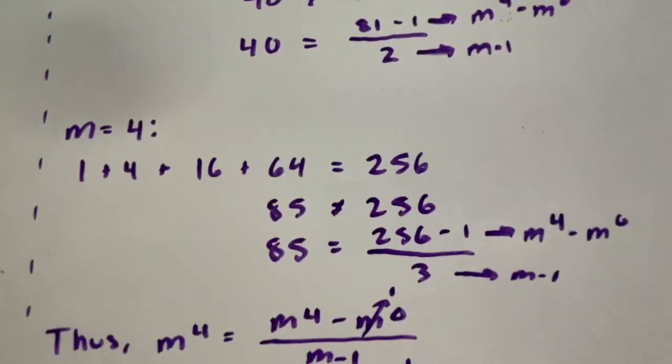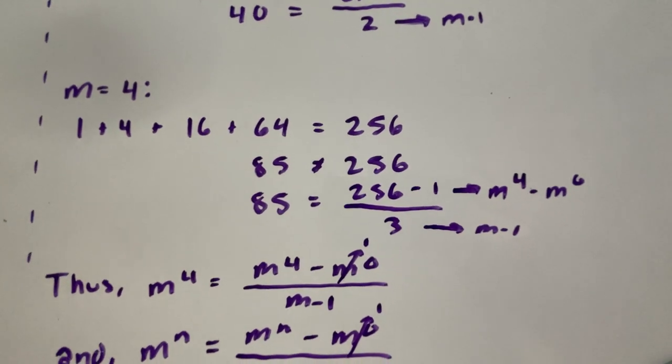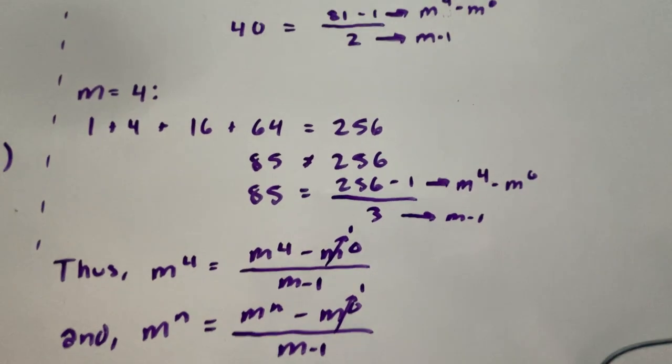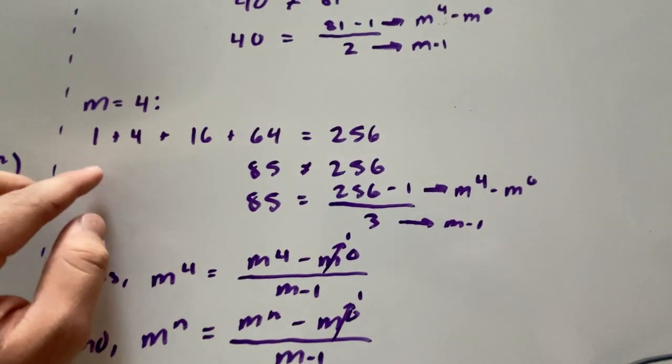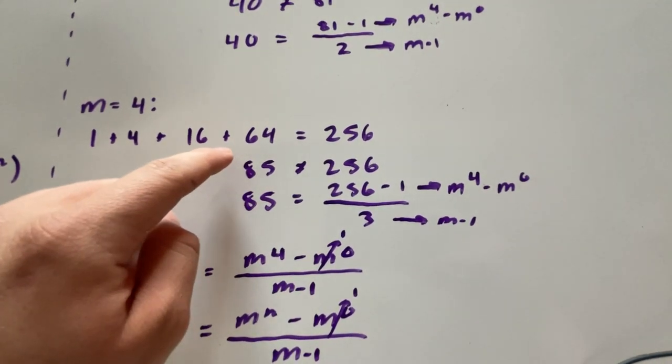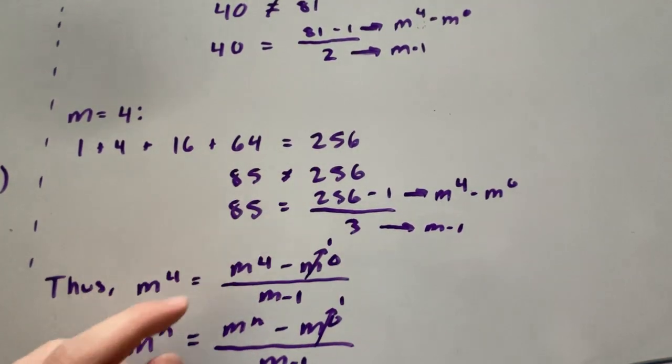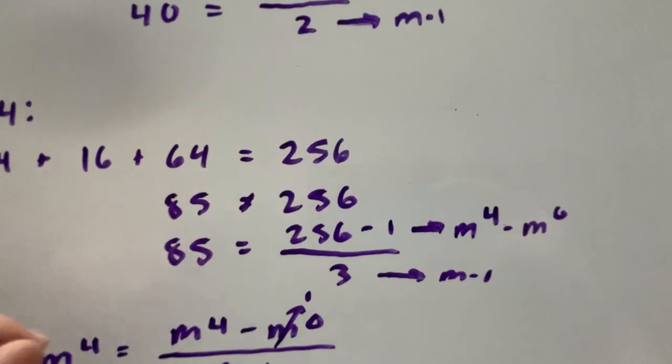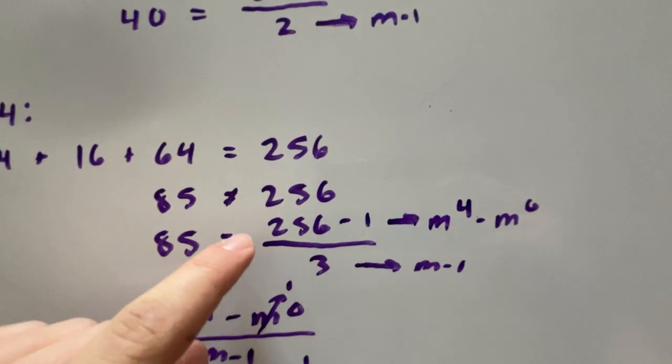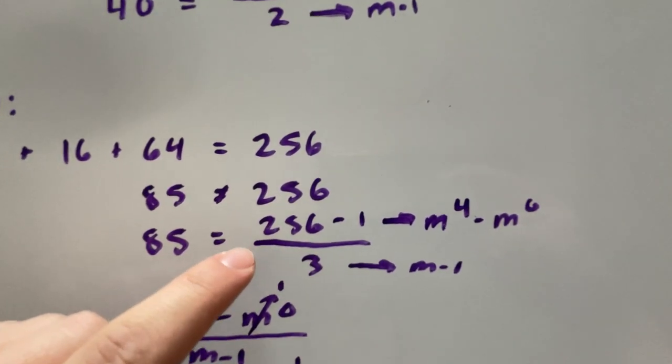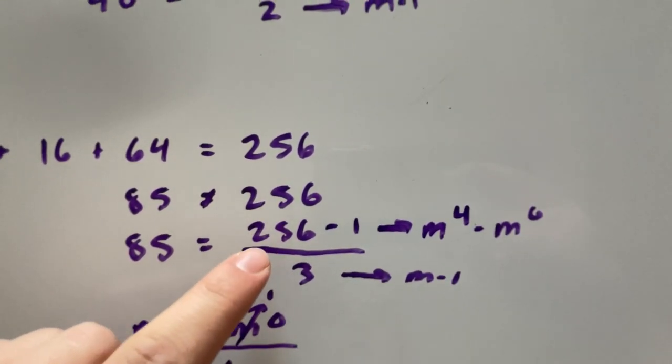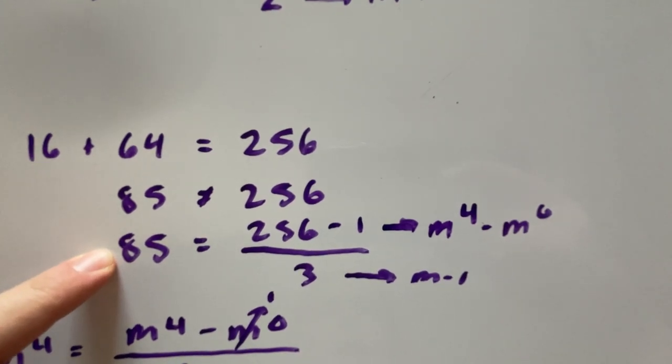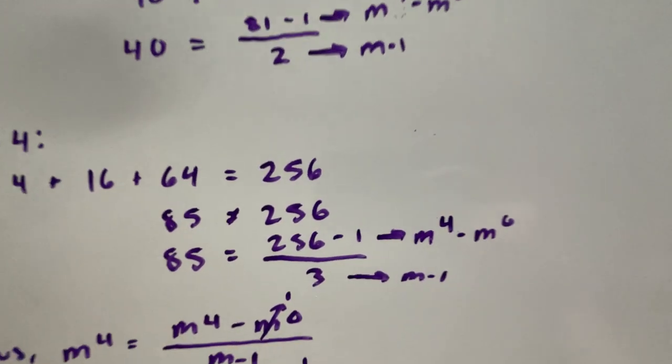Let's try m equals 4, just to see this works for any value of m. We get 1 plus 4 plus 16 plus 64 is equal to 256. We know that 85 is definitely not equal to 256, so we can do the same thing. We subtract 1 from 256 and we divide this term 255 by 3 and we get 85. So there's a cool pattern here.